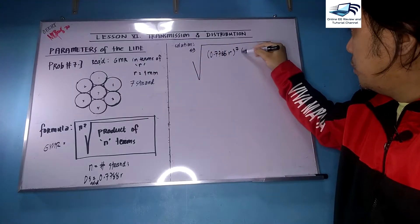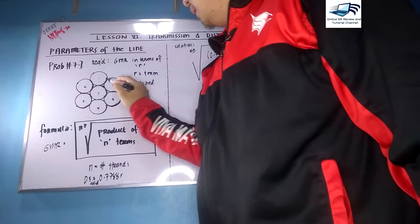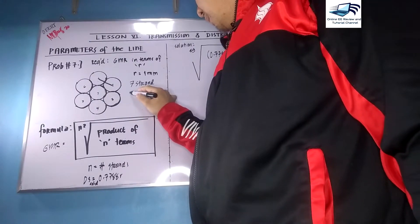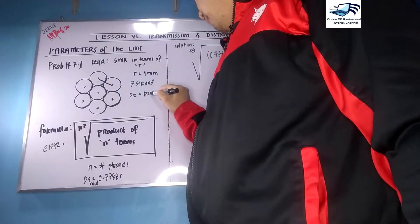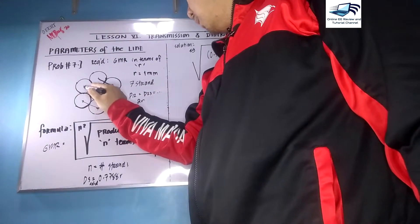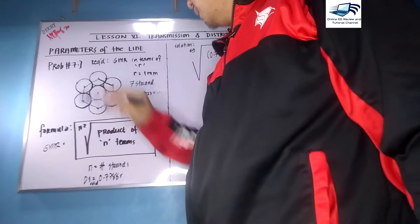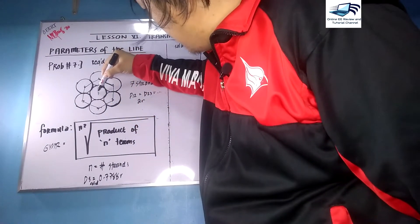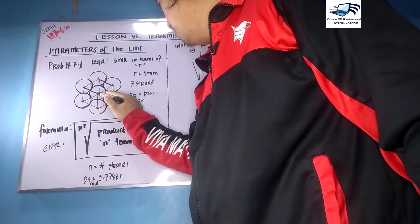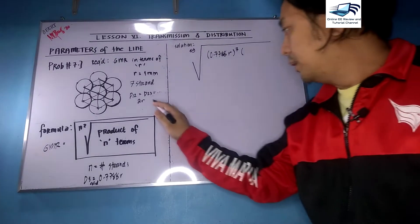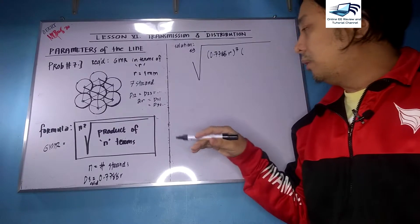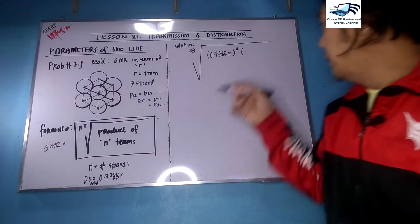You have seven distances, so you still need 42 more. What I will do is use the diameter. d12, which equals d23, etc., is twice r. Counting those adjacent pairs: one, two, three, four, five, six — that is six pairs, and the reverse (d21 = d32, etc.) gives another six, so that is 12 times two, giving 24 distances of twice r. Now we have 31 distances and need 18 more.